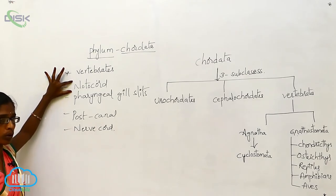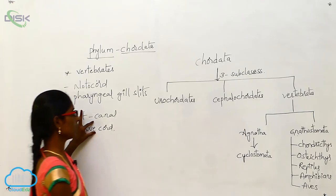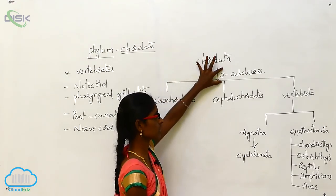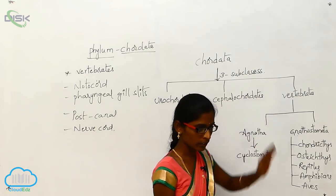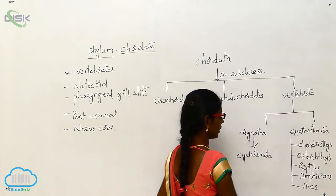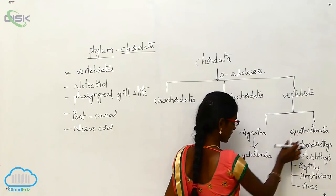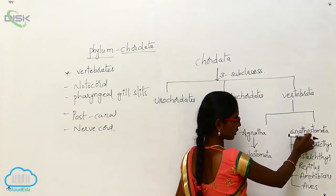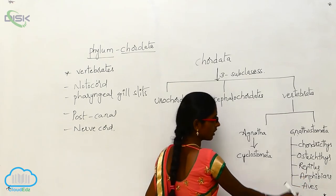So, phylum Chordata includes all the vertebrates. The characters are: presence of notochord, pharyngeal gill slits, post-anal tail, and nerve cord. Chordata divides into three subclasses: Urochordata, Cephalochordata, and Vertebrata. Vertebrata divides into Agnatha and Gnathostomata. Agnatha includes Cyclostomata, and Gnathostomata includes Chondrichthyes, Osteichthyes, reptiles, amphibians, and Aves.